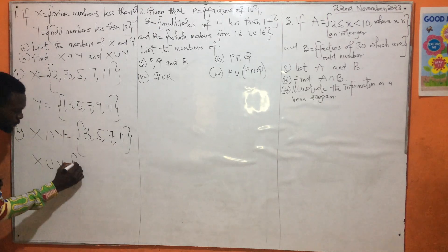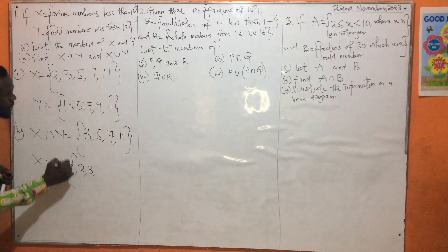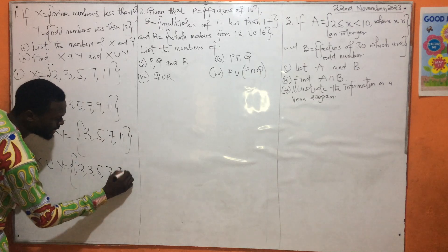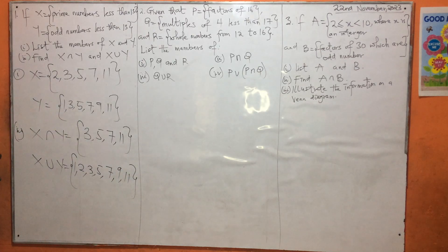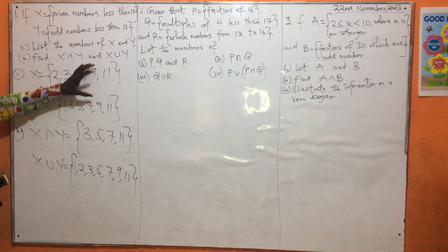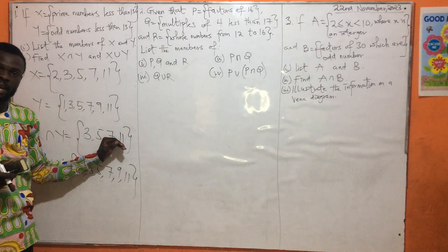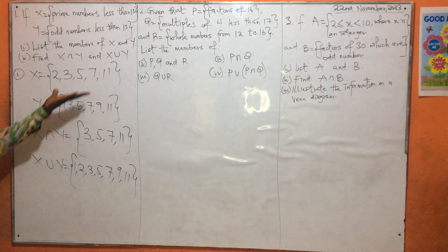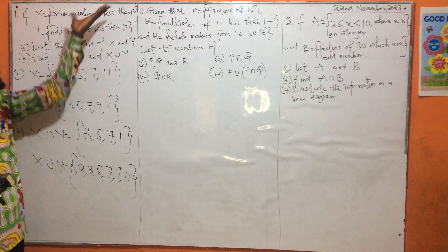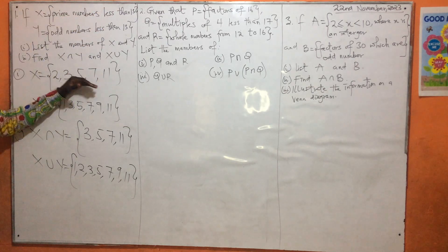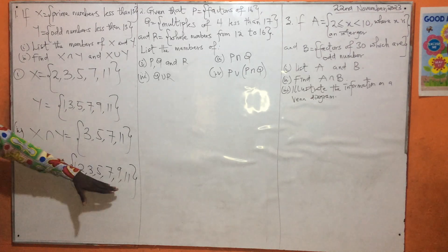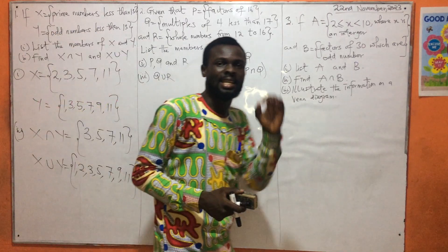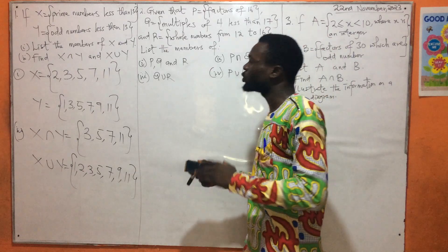So combining both sets we have: 1, 2, 3, 5, 7, 9, and 11. The intersection is knowing what is in each member of both sets and writing it down. The union is the combination or putting the two sets together. If you are listing the members and don't list them correctly, it is going to affect your answer.